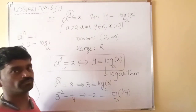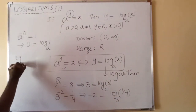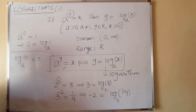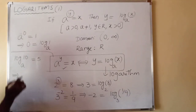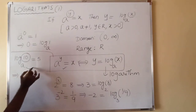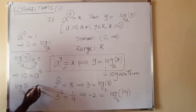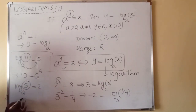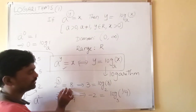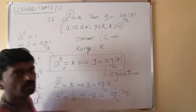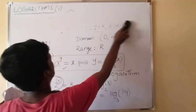Now converting from logarithmic form to exponential form. For example: log of 10 to the base a = 5, then in exponential form, 10 = a power 5. Another example: log₅ to the base a = 2, then 5 = a squared. Try to practice converting between exponential form and logarithmic form. Now I'm going to draw and discuss the graph of logarithmic functions.